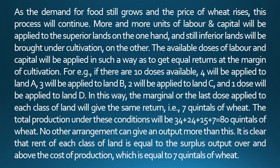As the demand for food still grows and the price of wheat rises, this process will continue. More and more units of labour and capital will be applied to the superior lands on the one hand, and still inferior lands will be brought under cultivation on the other. The available doses of labour and capital will be applied in such a way as to get equal returns at the margin of cultivation. For example, if there are ten doses available, four will be applied to land A, three to land B, two to land C, and one dose to land D. In this way, the marginal or the last dose applied to each class of land will give the same return, that is, seven quintals of wheat.